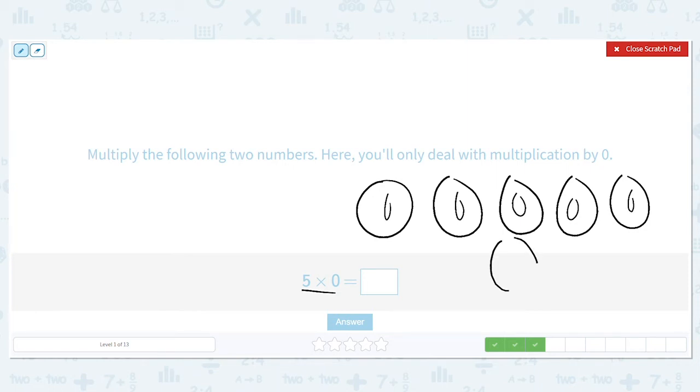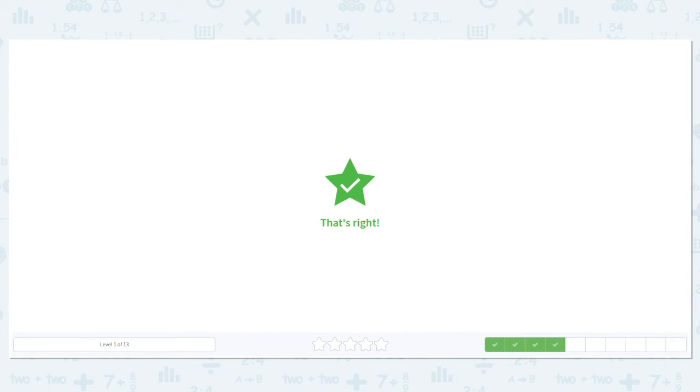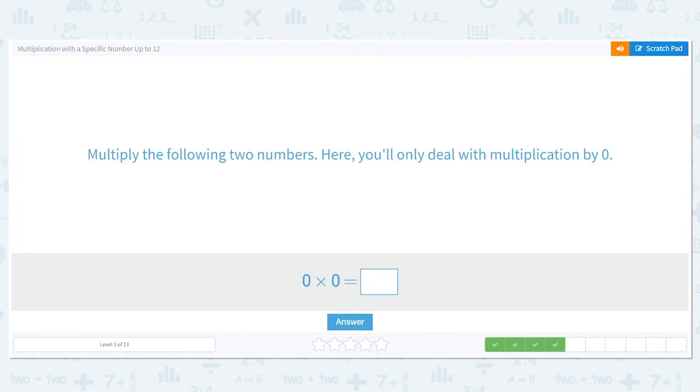Zero. There's nothing, nada, zilch. So how many total items in the groups do I have? Zero. I still have zero. Five times zero equals zero.